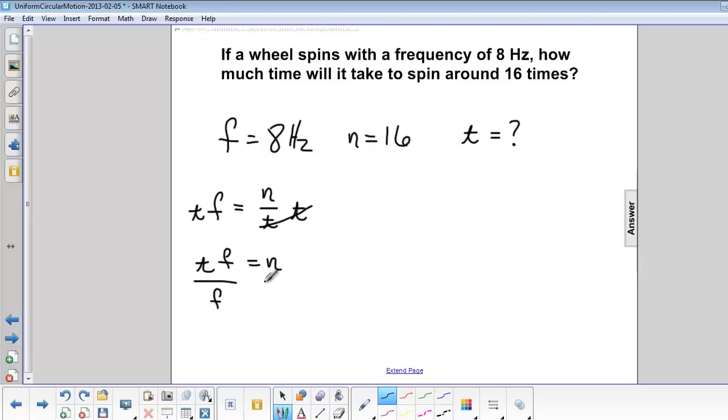Divide both sides by frequency, and so we have T is equal to N over F.